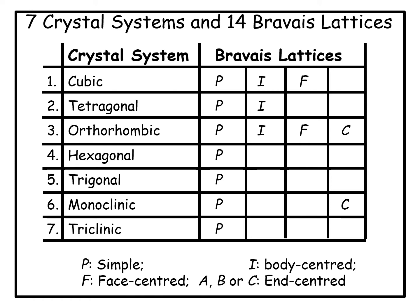Let us look at this table. This table represents all the 14 Bravais lattices. In the column 'crystal system', you see the 7 crystal systems listed by their names.